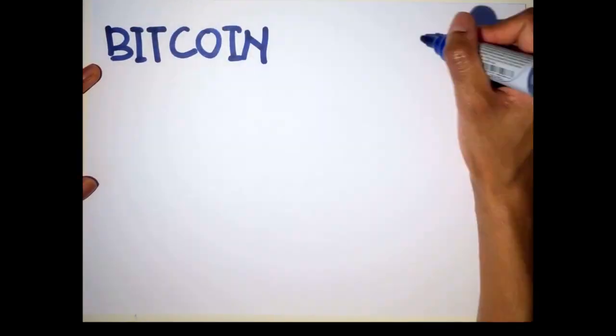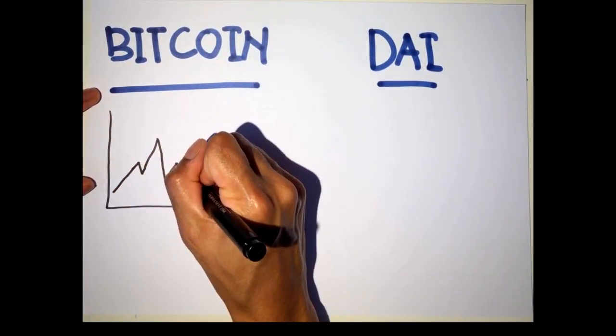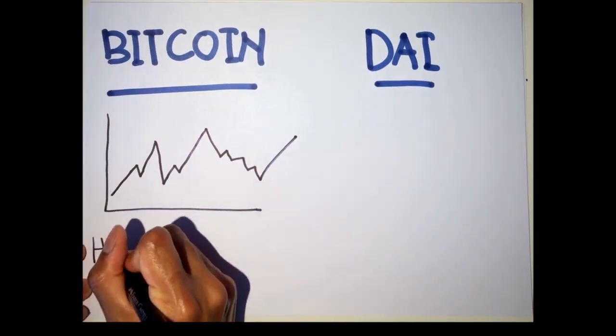So how is DAI different from Bitcoin? The value of Bitcoin is highly volatile, while value of DAI is fixed.